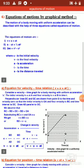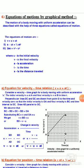Equation for velocity-time relation: v is equal to u plus at. Consider a velocity-time graph for a body moving with uniform acceleration a. The initial velocity is u at point A and final velocity v at point B in time t. Perpendicular lines BC and BD are drawn from point B to the time and velocity axes, so that the initial velocity is OA, the final velocity is BC, and the time interval is OC.